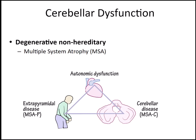MSA is one of the Parkinson's plus disorders. The patient presents with autonomic dysfunction, and looking at the triangle on the slide, the left-hand side shows the typical Parkinsonian flexed posture. In addition, MSA is also known for cerebellar disease and associated ataxia.